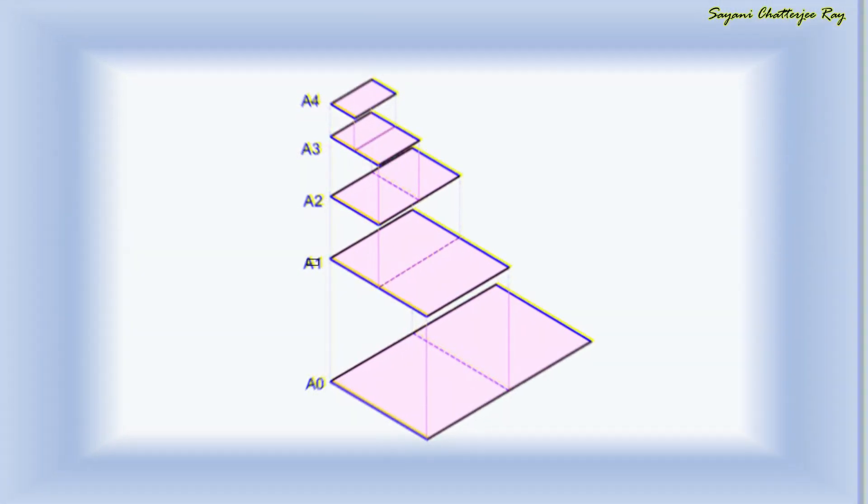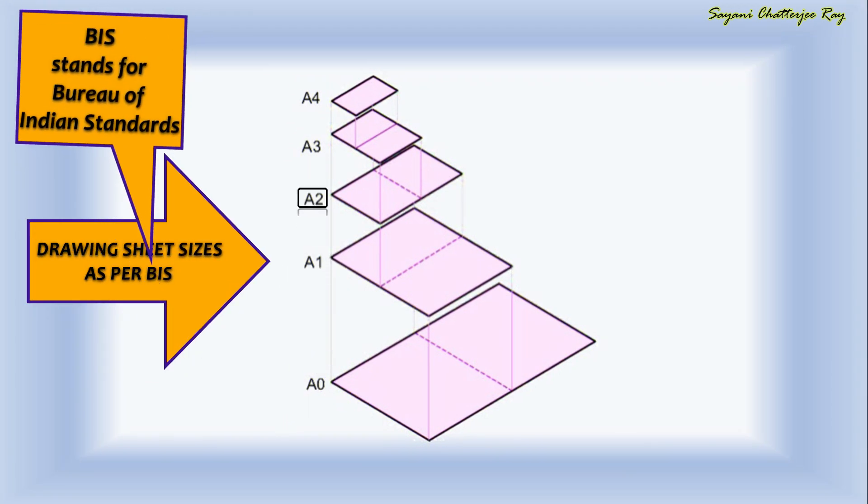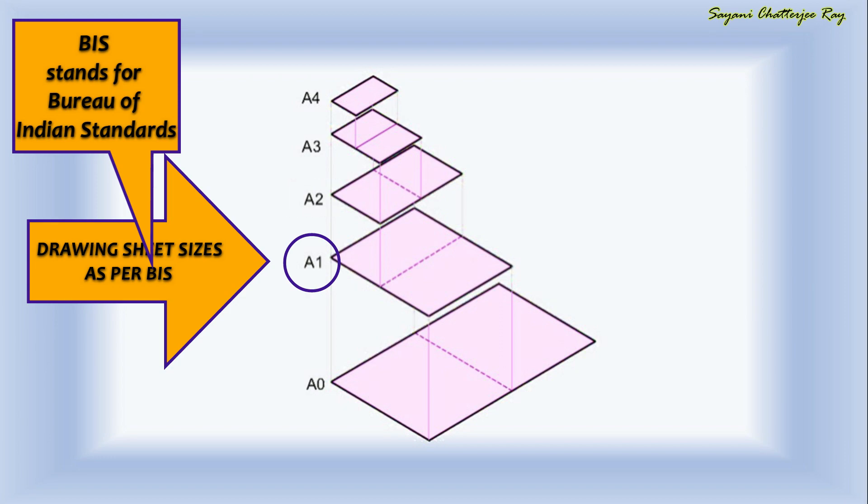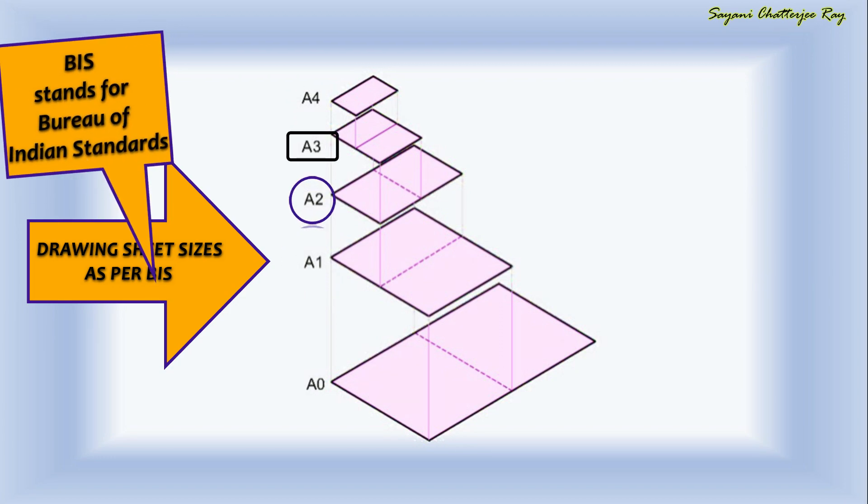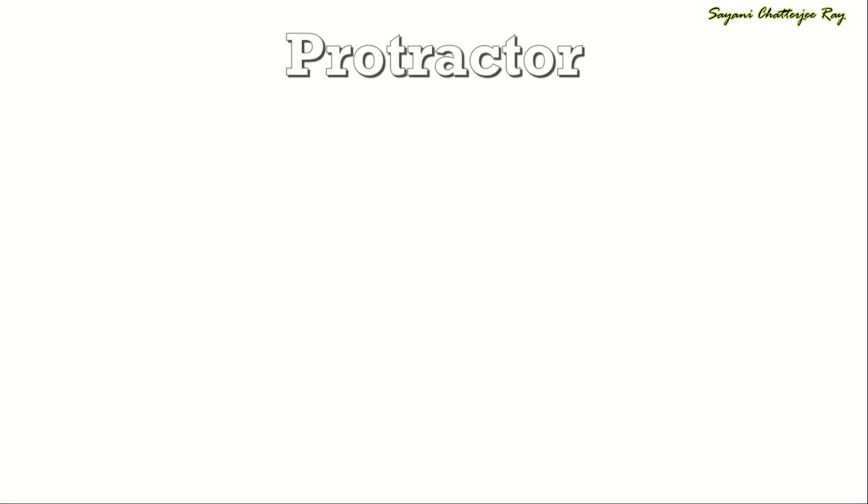To be more specific, A1 is just half of A0 sheet, A2 is half of A1 sheet, A3 is half of A2 sheet, A4 is half of A3 sheet, and A5 is half of A4 sheet.